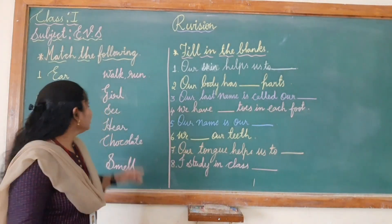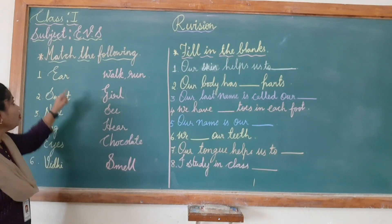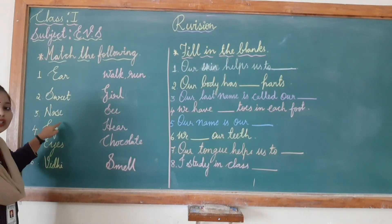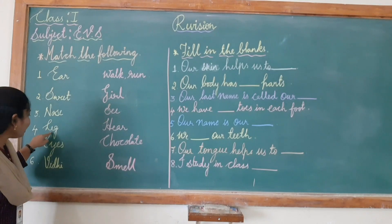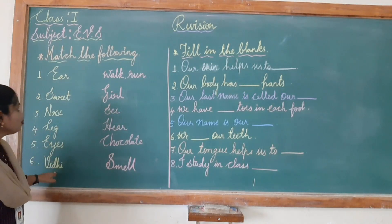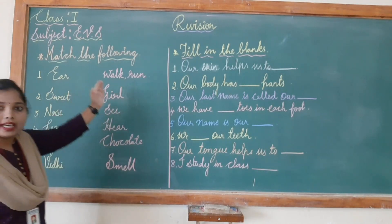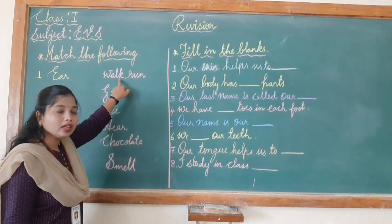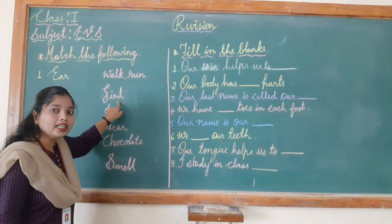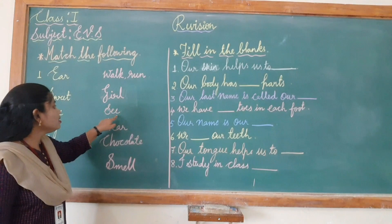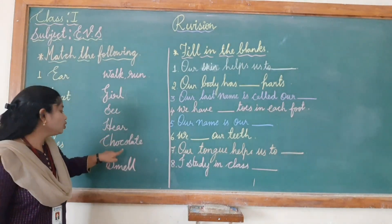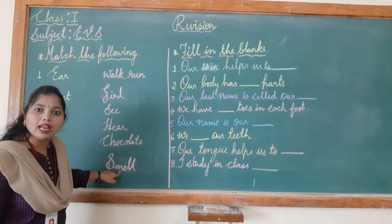Here in the first column: ear, sweet, nose, leg, eyes, Vidhi. And in the second column: walk or run, girl, see, hear, chocolate, smell.